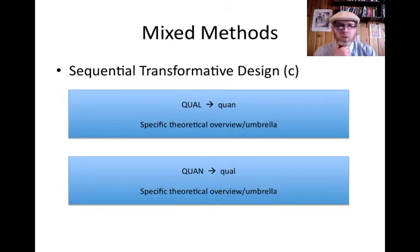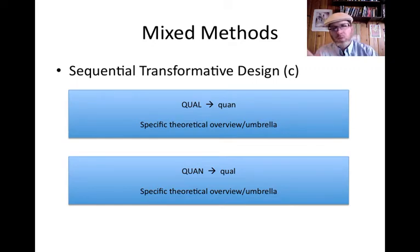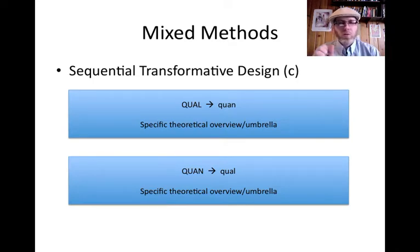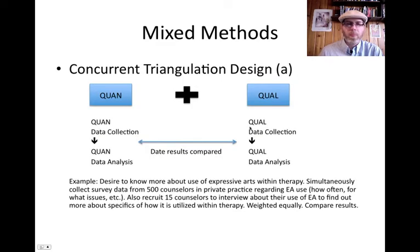Then there's the sequential transformative design. Transformative designs are theory-driven. Each box denotes one particular study. In the top version, you initiate the qualitative research first and then move into the quantitative — but the whole study sits within a particular theoretical orientation or umbrella. In the bottom version, it's also sequential and transformative, but you start with the quantitative and move into the qualitative, with theory as the main overarching framework.